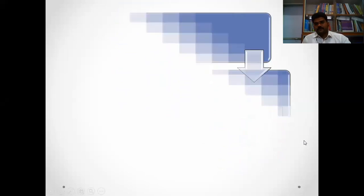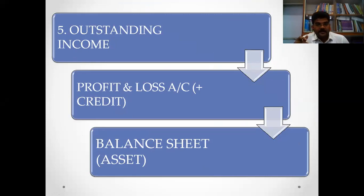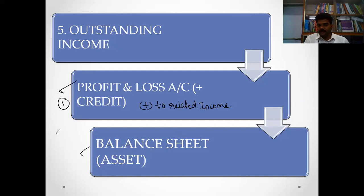Number 5: outstanding income - कोई income आना बाकी है। Commission या rent मिलने वाला था लेकिन अभी तक मिला नहीं। First effect: add to related income - profit and loss account credit side में add करेंगे। Second effect: पैसा आना बाकी है इसलिए यह asset है - balance sheet asset side में लिखेंगे।